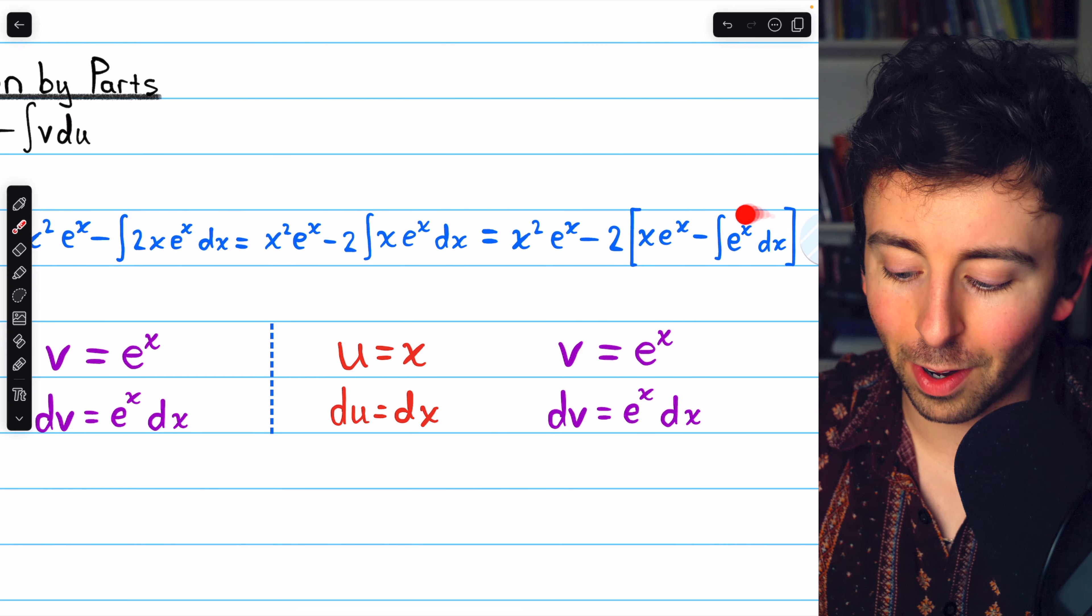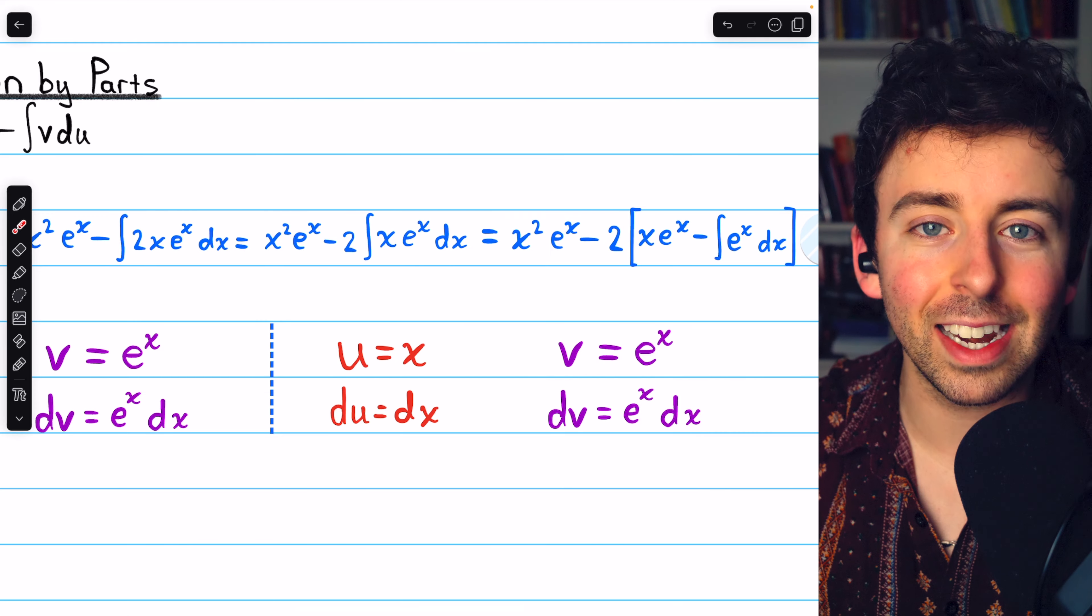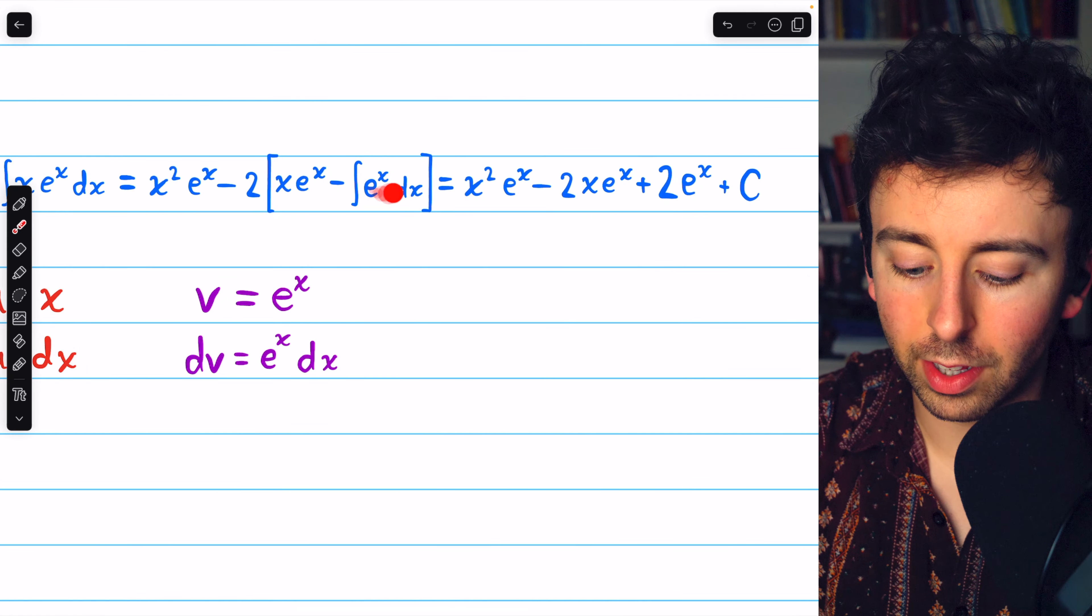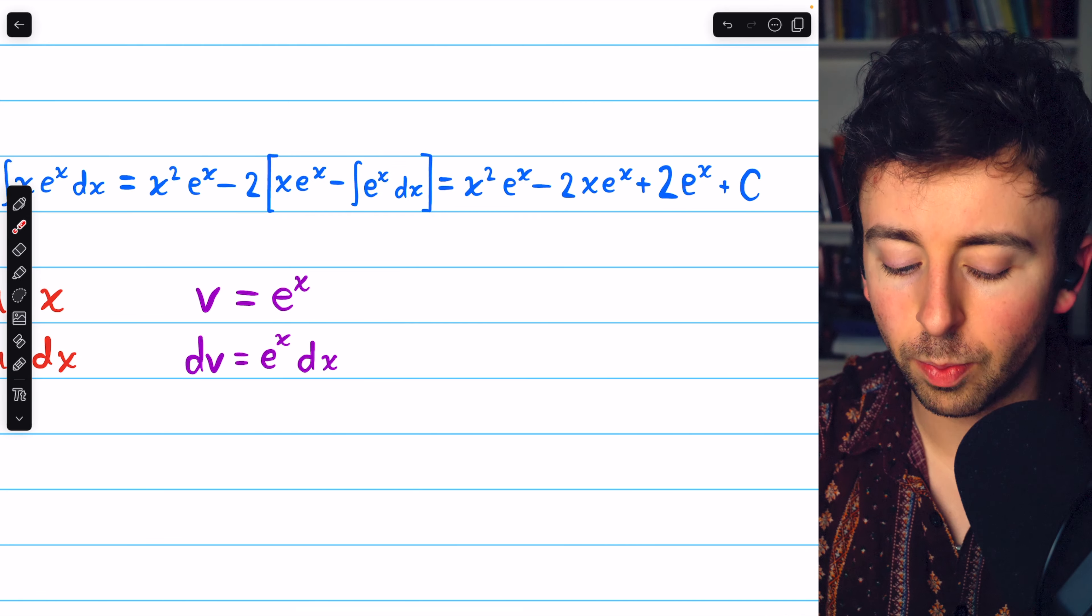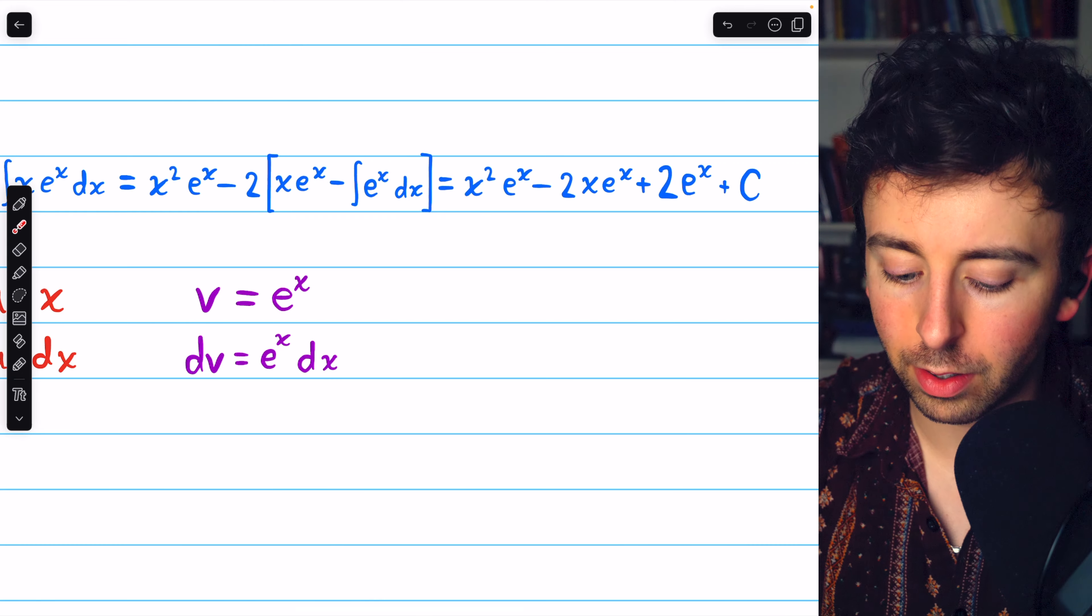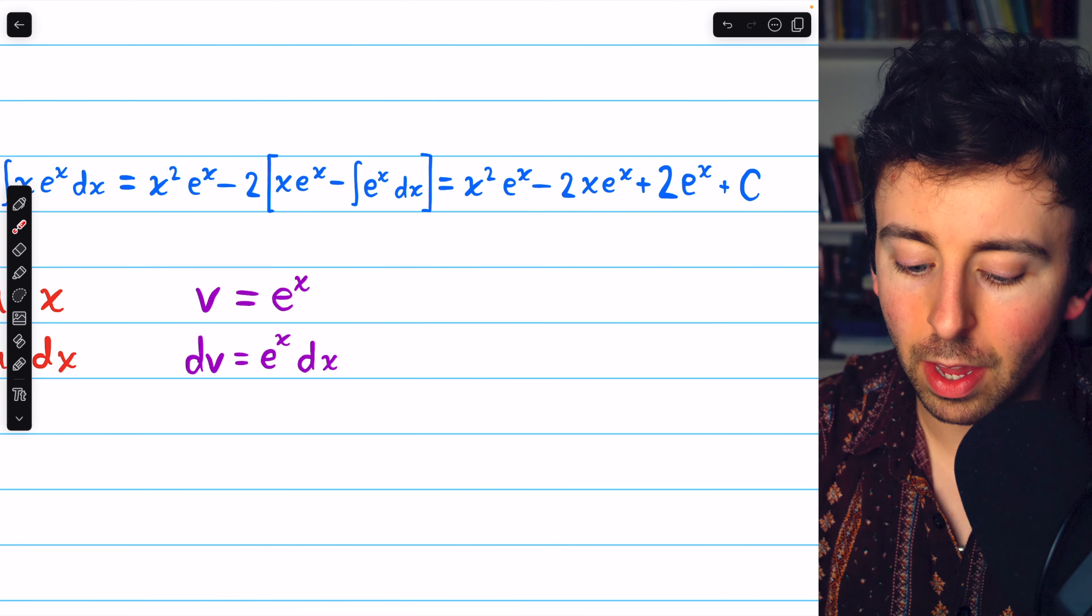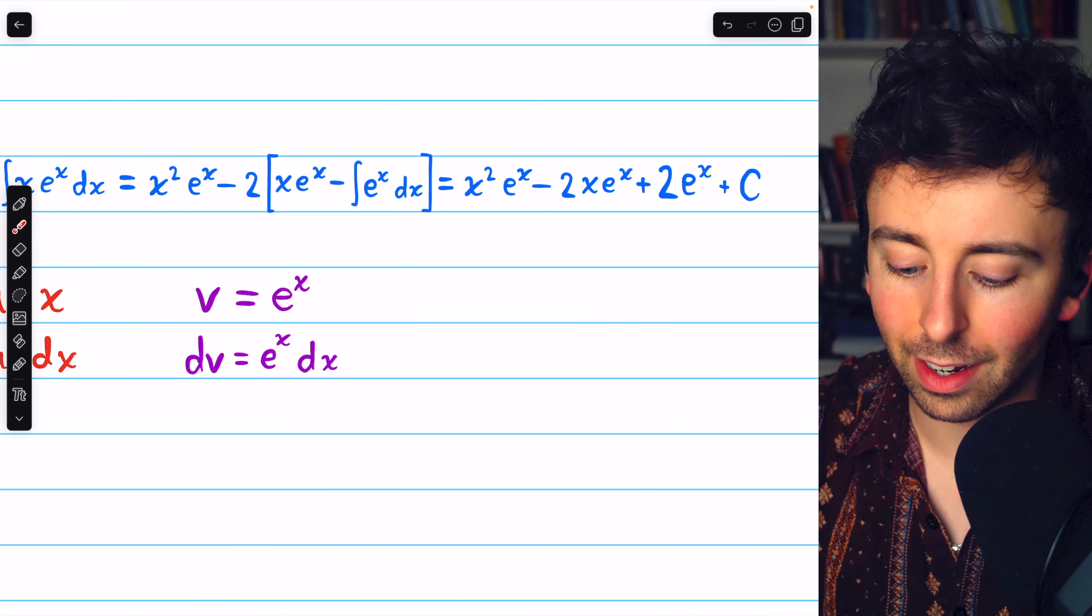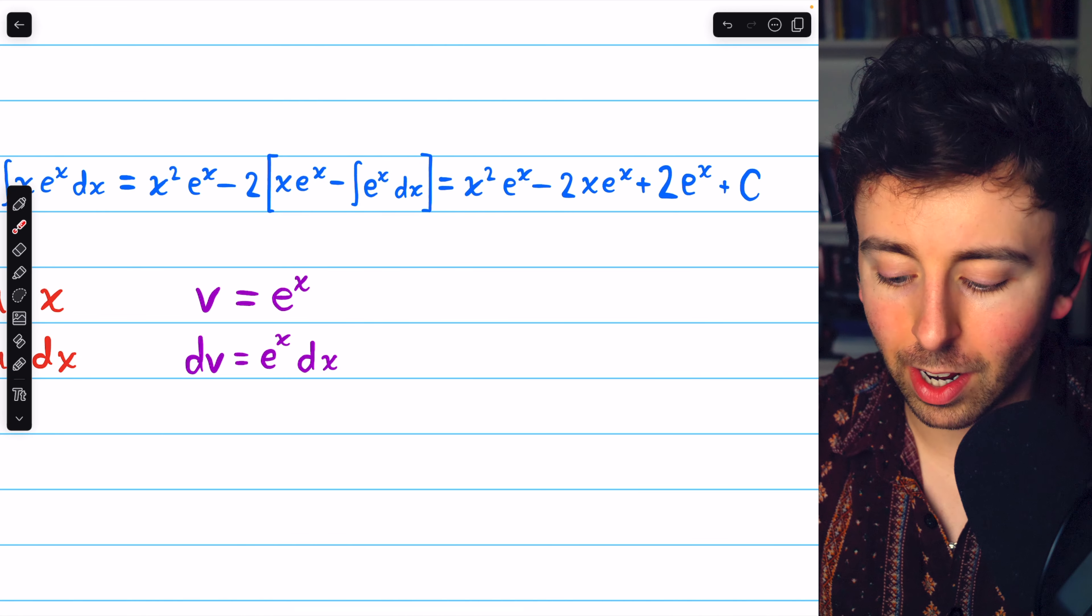All right, this integral is very easy. The integral of e to the x is just e to the x. So finally, we can finish this problem. Finishing the integral and distributing the negative 2, we have x squared e to the x from our very first integration by parts, minus 2x e to the x, plus 2 times this integral, which is just plus 2 e to the x, and then plus the arbitrary constant.